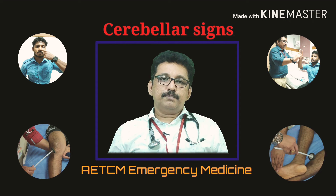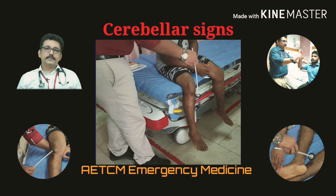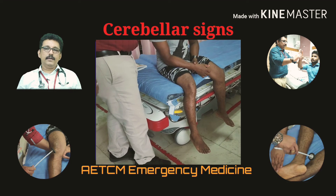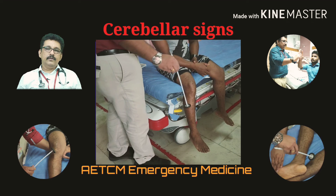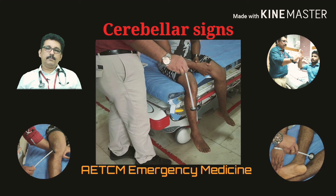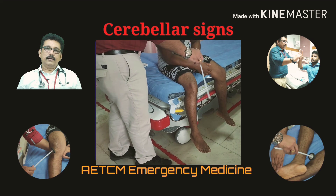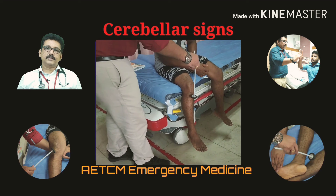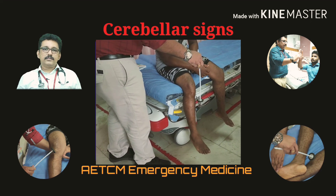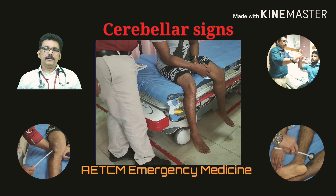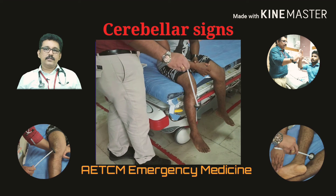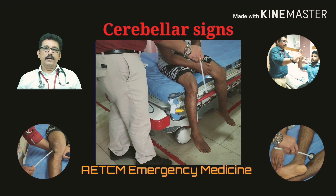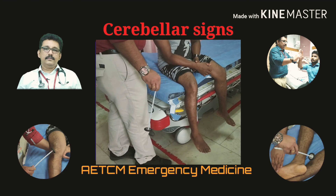The pendular knee jerk test: ask the patient to sit on the edge of the bed and elicit the knee jerk. Normally, up to three oscillations of the leg are acceptable. If the oscillations are increased in number due to hypotonia, this suggests a cerebellar lesion on that side.